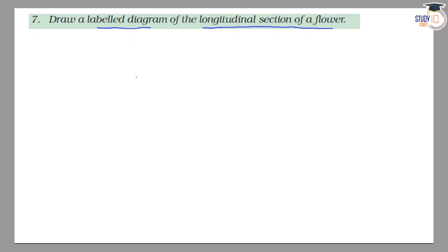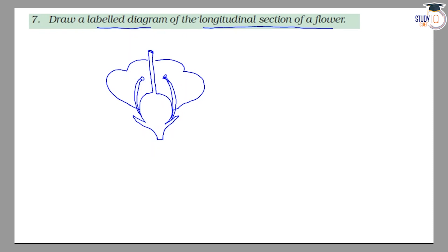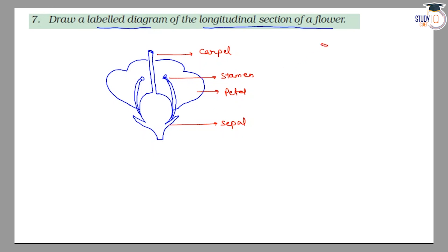So now we have the diagram to make. This one is the stamen, this is the petal, and this is the sepal. Now in the same way we will make it a side view — this one is the stamen, this is the petal, and this is the sepal.